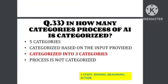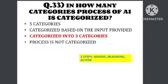Question: In how many categories is the process of artificial intelligence categorized? Artificial intelligence is categorized into three categories: sensing, reasoning, and action.